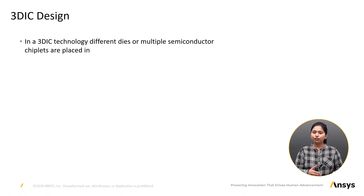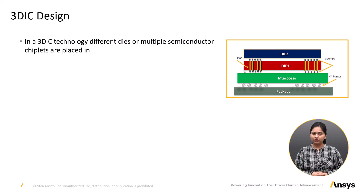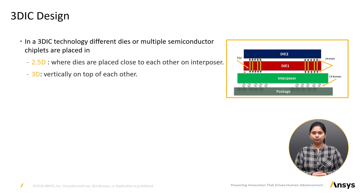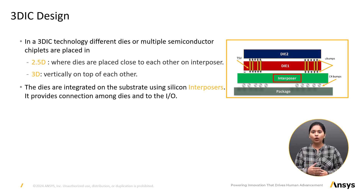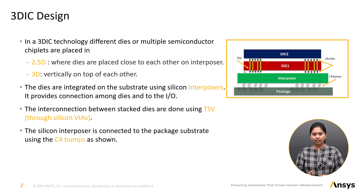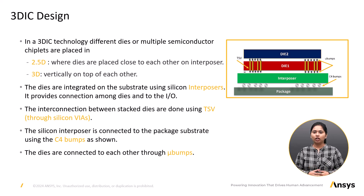In 3D IC technology, different dies on multiple semiconductor chiplets are placed in two ways: either 2.5D IC, where dies are placed close to each other on an interposer, or 3D — vertically on top of each other. The dies are integrated on the substrate using silicon interposers, which provide connections among dies and the input/output ports. The interconnection between stacked dies is done using through-silicon vias, which can penetrate to the substrate layer and provide connections between layers. The silicon interposer is connected to the package substrate using C4 bumps, and the dies are connected to each other through micro bumps.